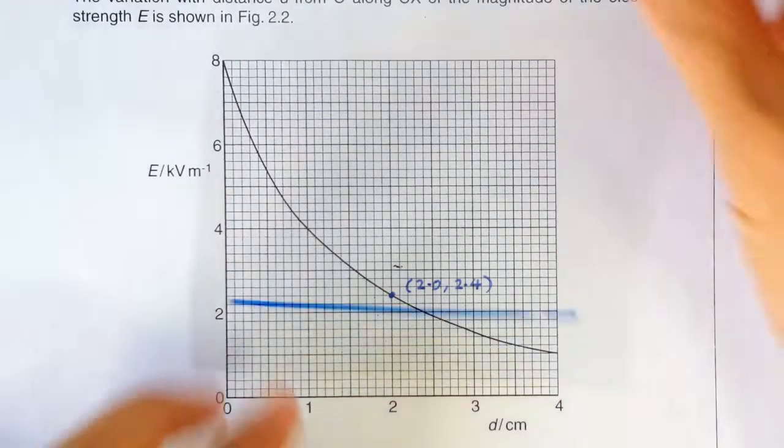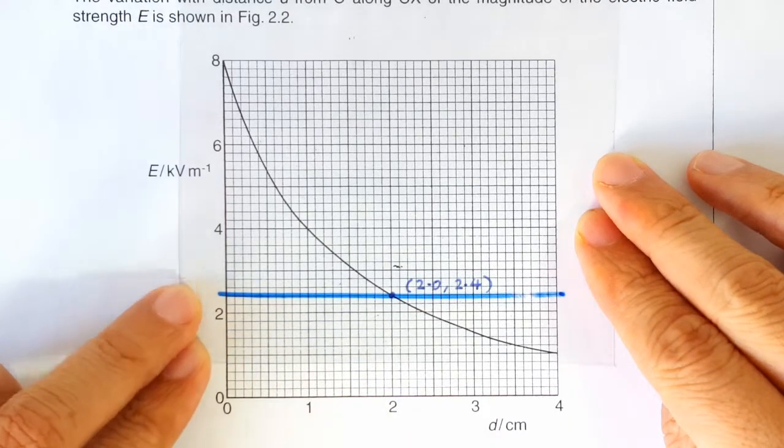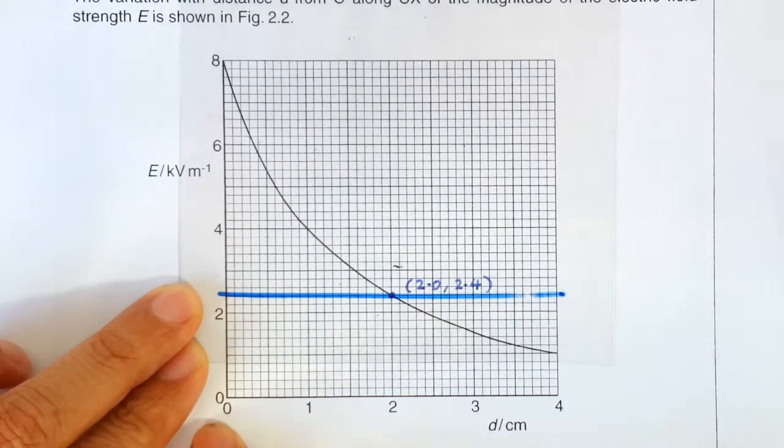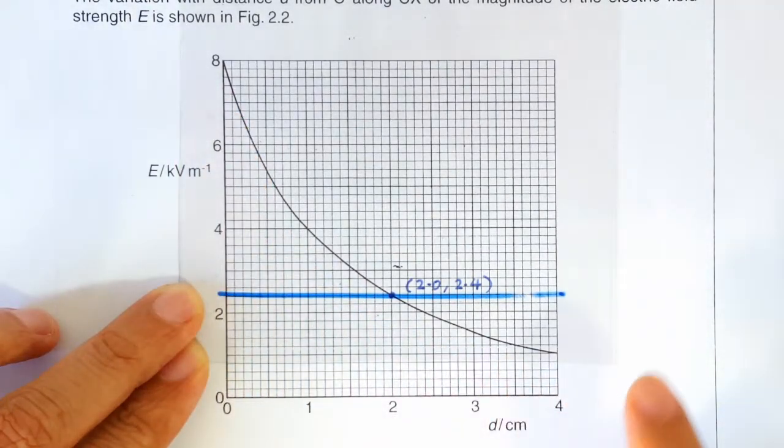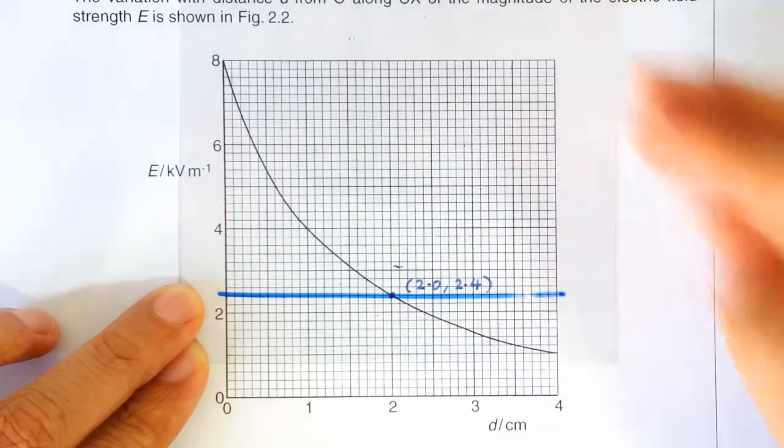So basically, we are assuming that the electric field strength is constant over this distance here. But from the shape of the graph, you can tell that the actual average field strength is higher than this.